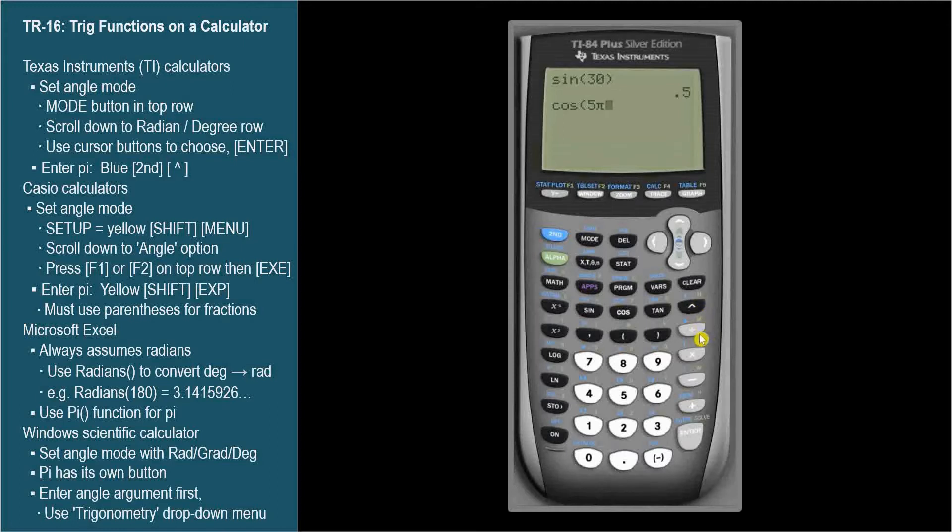So now we have 5 pi. Press the division button and then 6. Close the parenthesis. Enter. And we get negative 0.866, which is an approximation of negative square root of 3 over 2.